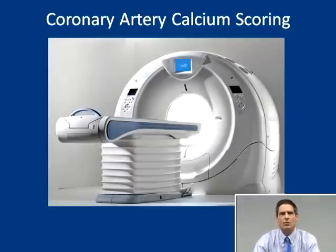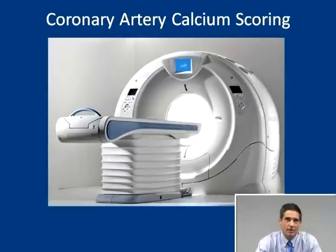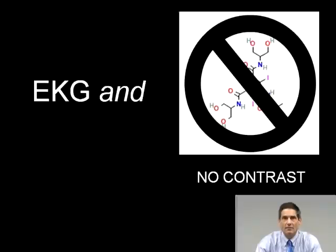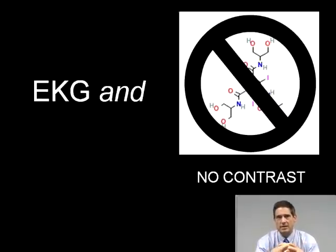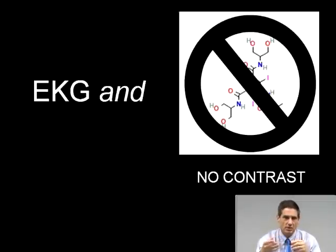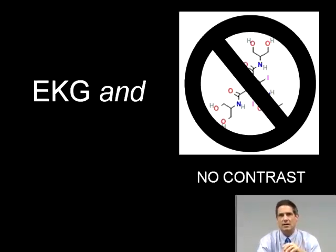Coronary artery calcium scoring, also called CACS, is another CT-based study used to measure coronary artery calcium content. For this study, you use an EKG but no contrast. The patient is hooked up to an EKG, a non-contrast study is obtained with data acquisition coordinated with the heartbeat to eliminate motion, and then you measure how much calcium is present in the coronary arteries.